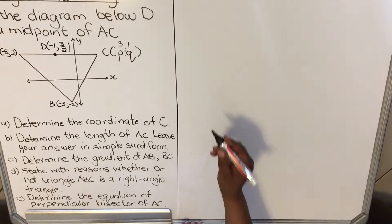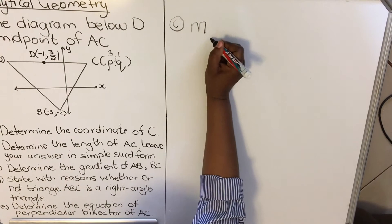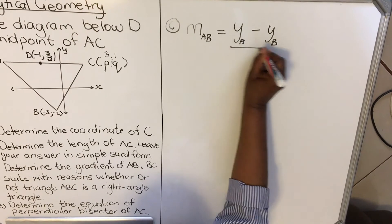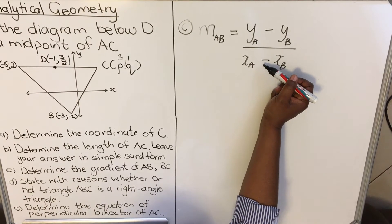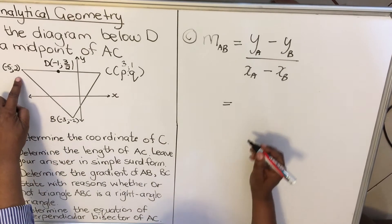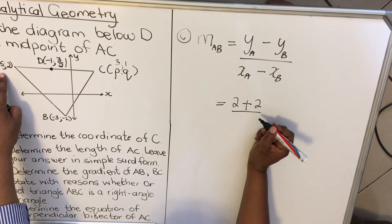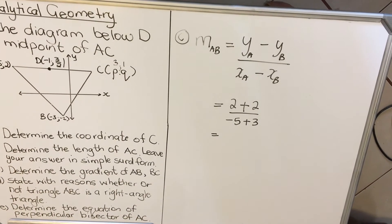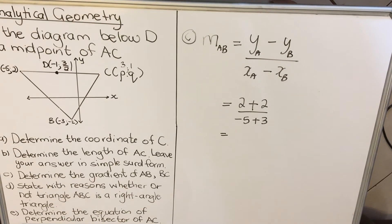Let's look at number C — determine the gradient of AB. Gradient is denoted by the small letter m. The formula is: m = (y_A - y_B) / (x_A - x_B). With gradient and distance formulas you always have a minus — that's very important. y_A = 2, y_B = -2, x_A = -5, x_B = -3. Substituting: m_AB = (2 - (-2)) / (-5 - (-3)) = 4 / (-2) = -2.